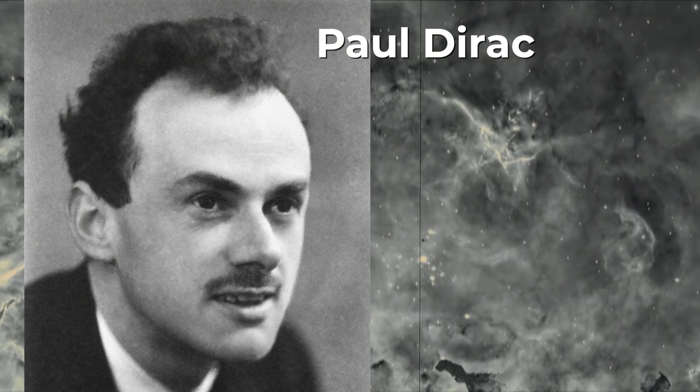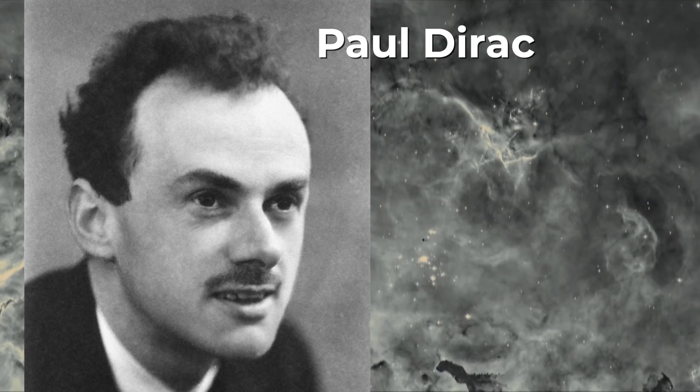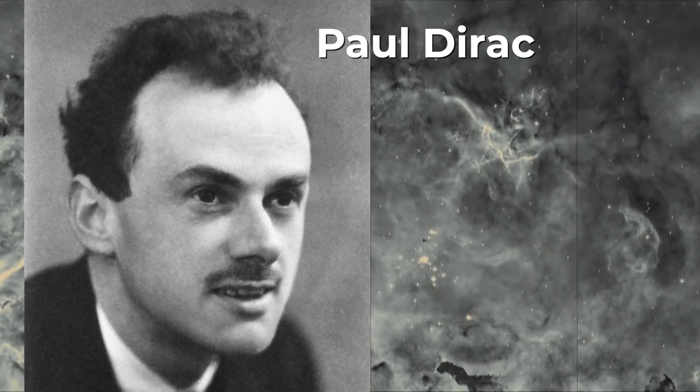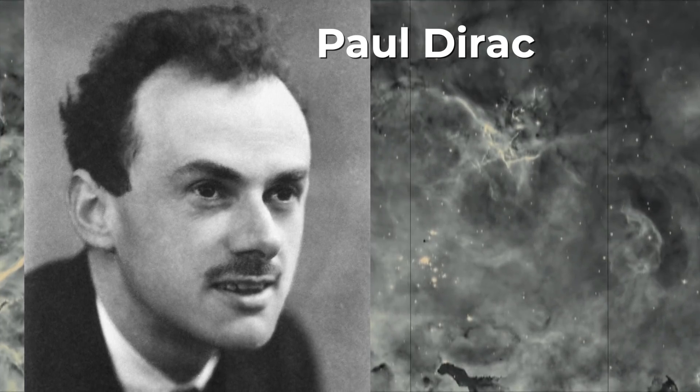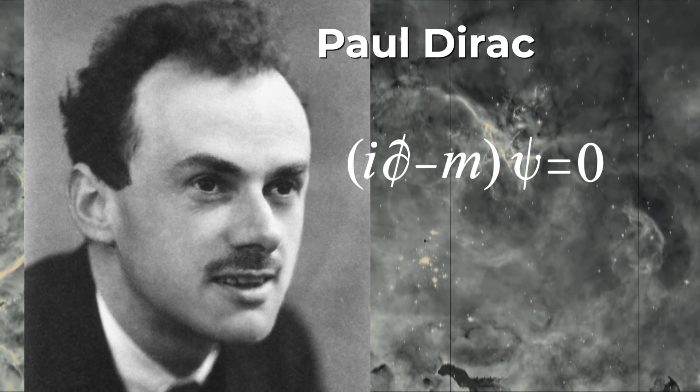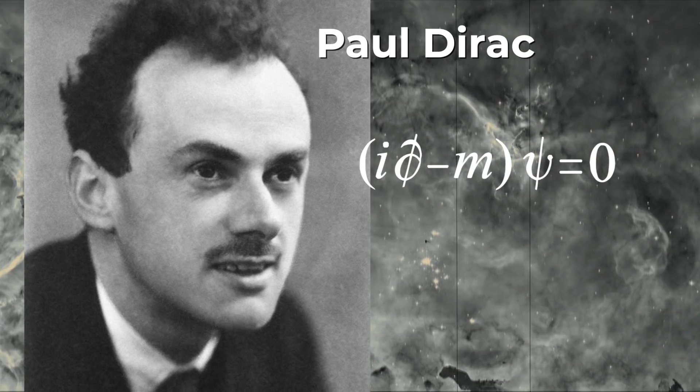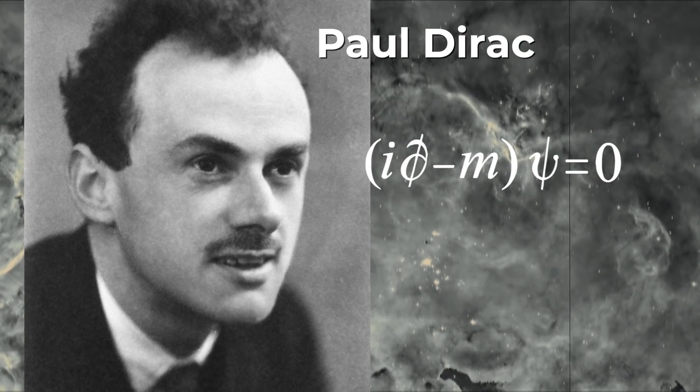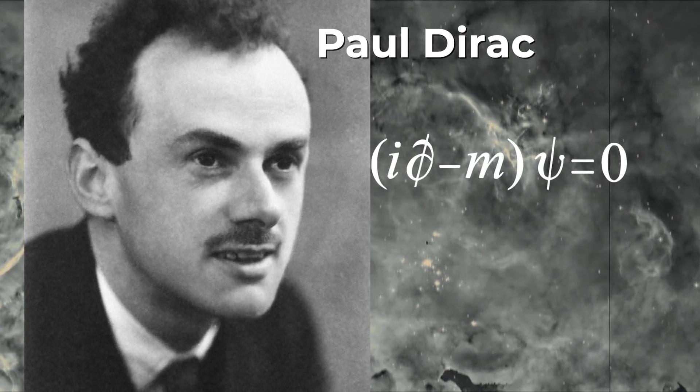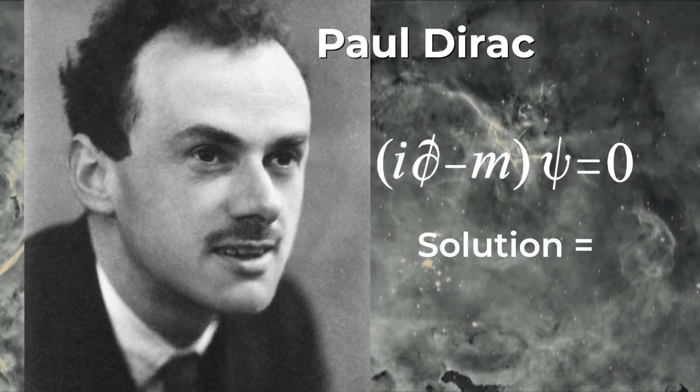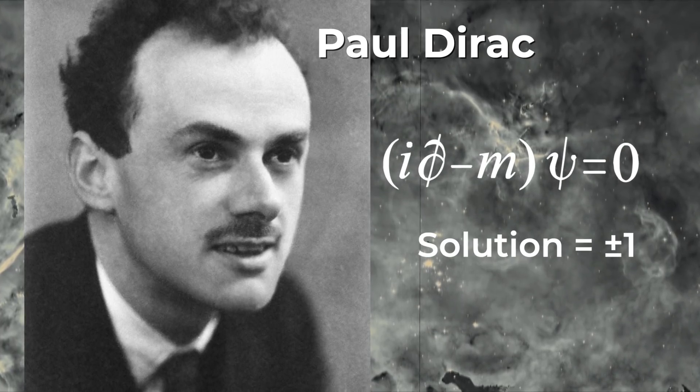It was in 1928 that British physicist Paul Dirac first tried to unify the laws of quantum mechanics and Einstein's theory of special relativity. He was successful and the result is a mathematical expression called the Dirac equation. Solving the Dirac equation even for a single electron is challenging. But when the dust settles, the solution looks something like this, with both a positive and negative answer.